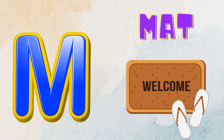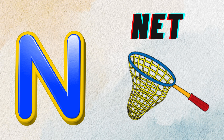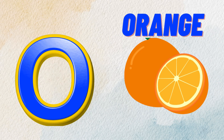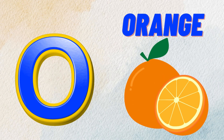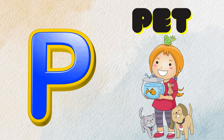M is for Mat, M-M-Mat. N is for Net, N-N-Net. O is for Orange, O-O-Orange. P is for Pet, P-P-Pet.